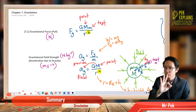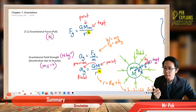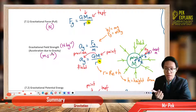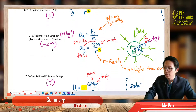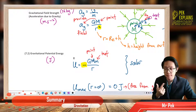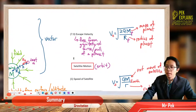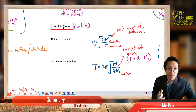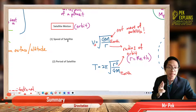In this chapter we have three subtopics. The first one is called the gravitational force and gravitational field strength. Then in 7.2 we will learn gravitational potential energy. In 7.3 we will learn about escape velocity, satellite motion, and also the speed of satellite and the period of satellite.